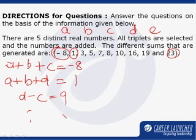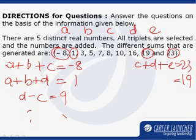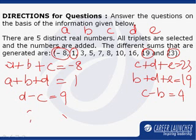Similarly, my highest sum 23 has to be C plus D plus E and my second highest sum 19 has to be B plus D plus E. From where I can very clearly see that C minus B has to be 4. So, there is a difference of 4 units between C and B and there is a difference of 9 units between D and C.